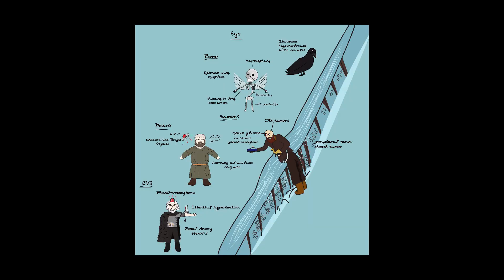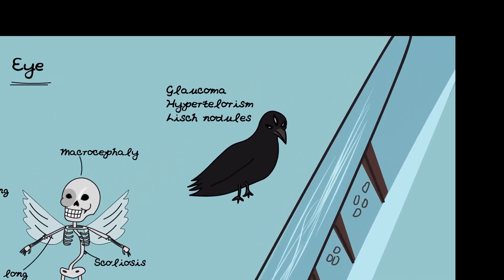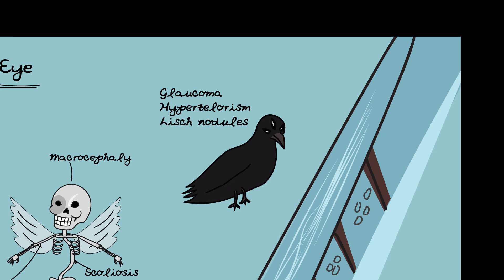In terms of the eye manifestations, the three-eyed raven has three eyes, and there are also three things to remember. The first is glaucoma. The second is hypertelorism, which means there is wide spacing between the eyes. And the third is Lisch nodules of the eye.